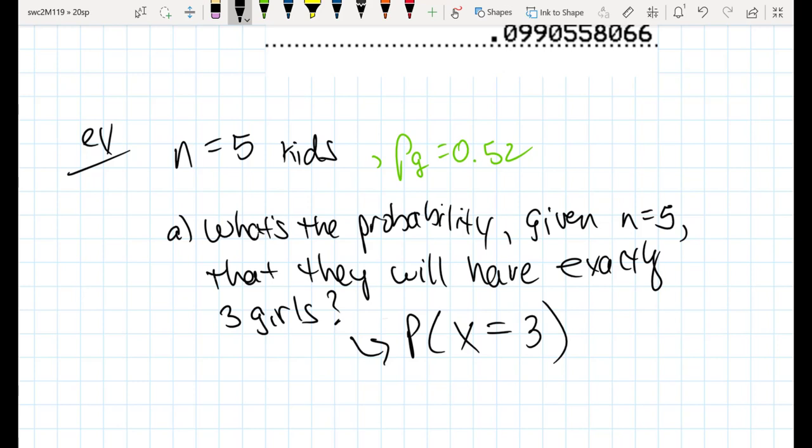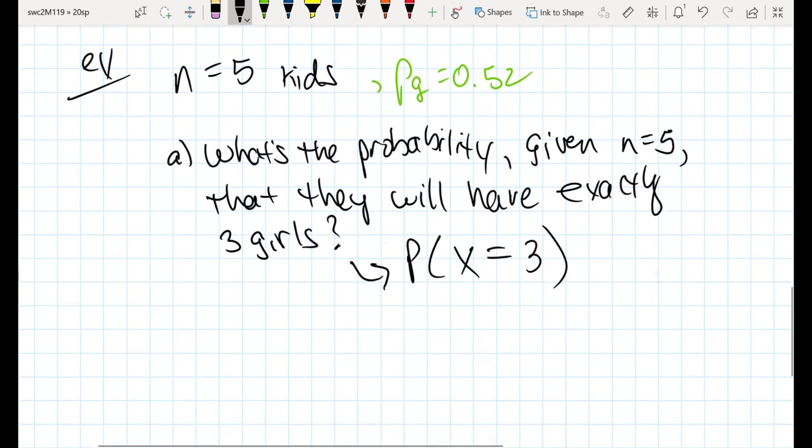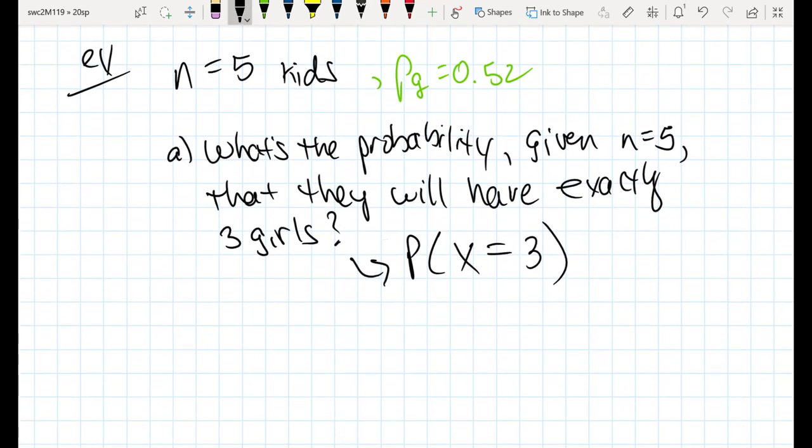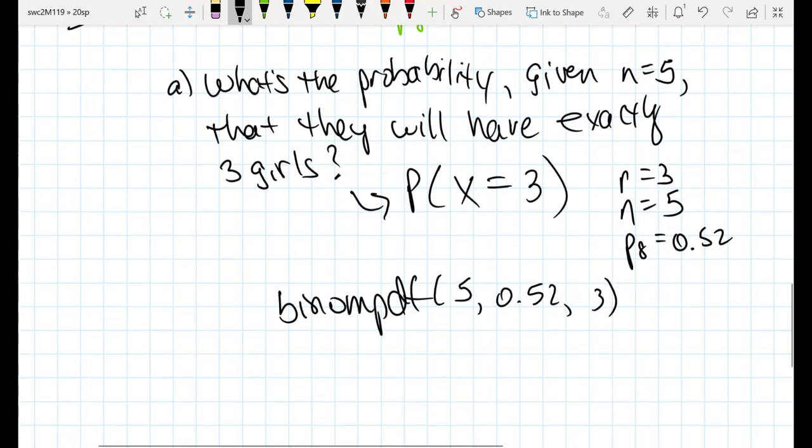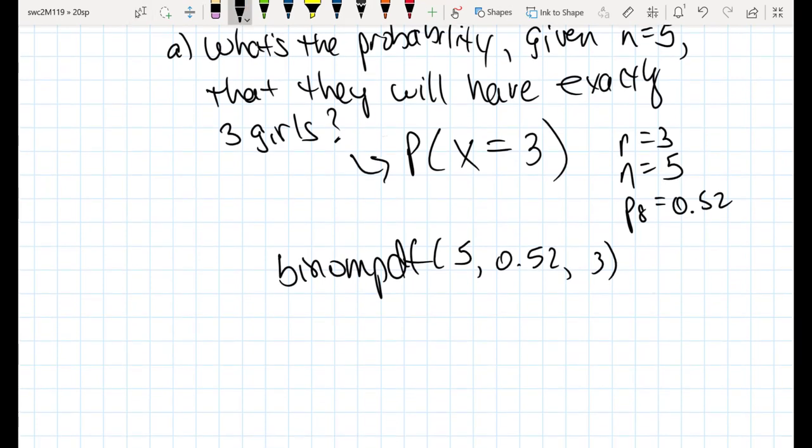So let's just use some of the functions in our calculator to help us. Number of successes we're interested in is three, the number of trials is five, probability of having a girl is 0.52. And if we plug that into a calculator we get binompdf, plug in the values of the five, the 0.52, and then the three. If you plug that into your TI, you should get a value that's I think it should be 0.299, 0.4.